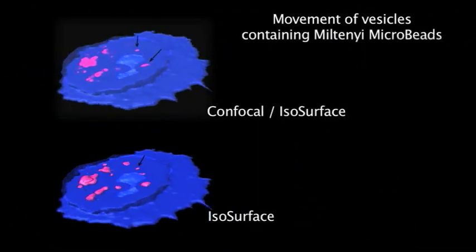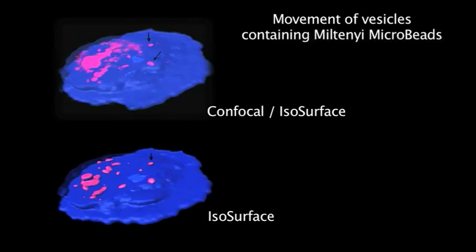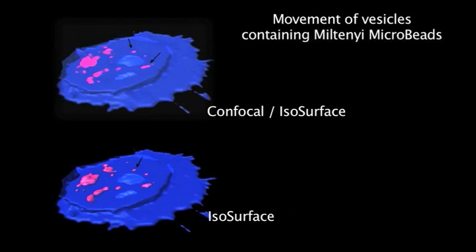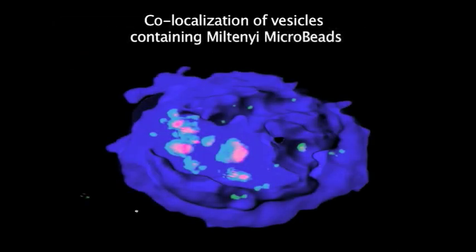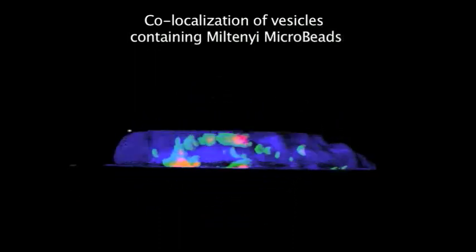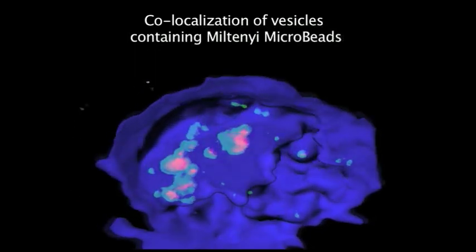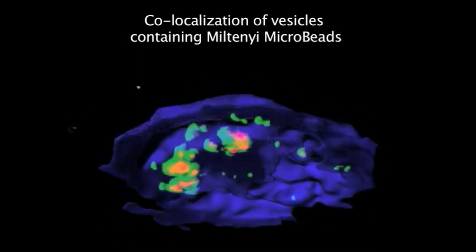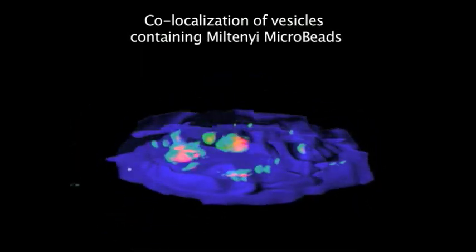Here, the arrows demonstrate movement of vesicles containing the Miltenyi microbeads. Using isosurface imaging, we see the vesicles containing the Miltenyi microbeads are colocalizing with acidic compartments. Acidic vesicles are labeled with LysoTracker Green, and the yellow color indicates colocalization with the Miltenyi microbeads.